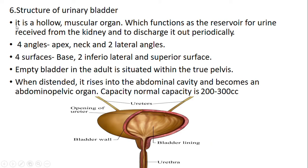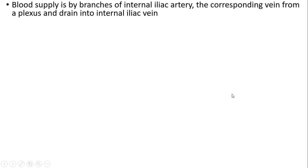Sixth question: structure of urinary bladder. It is a hollow muscular organ which functions as a reservoir for urine received from the kidney, and discharges it periodically. It has four angles: apex, neck, and two lateral angles; and surfaces: base, inferior, lateral and superior surface. When empty, the bladder in an adult is situated within the true pelvis. When distended, it rises into the abdominal cavity and becomes an abdominopelvic organ. Normal capacity is 200–300 cc. Blood supply is by branches of the internal iliac artery; veins form a plexus and drain into the internal iliac vein.